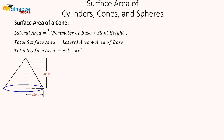Let's look at the surface area of a cone. This is quite similar to a pyramid. We have the sum of the lateral area and the area of the base. The lateral area is half of the perimeter of the base times the slant height. Since we have a slant height, we're going to use the Pythagorean theorem to figure out its value.